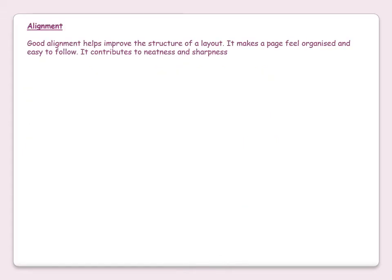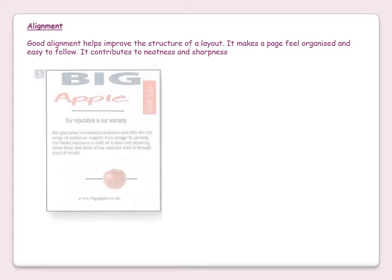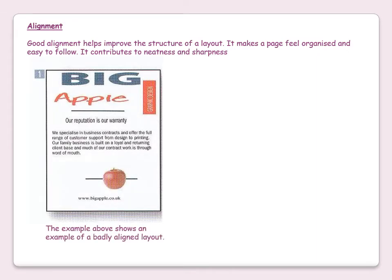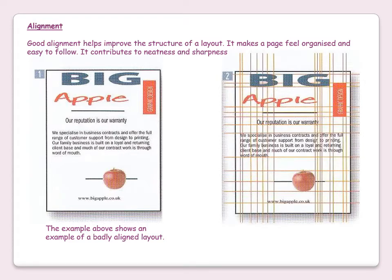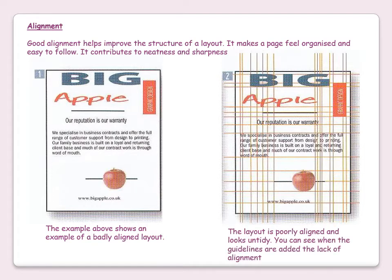Alignment. Good alignment helps improve the structure of a layout. It makes a page feel organized and easy to follow, and it contributes to neatness and sharpness. The example above shows a badly aligned layout. At first you might think it's not too bad, but when you add grid lines or guidelines showing where all the edges of the different parts are, you can see the layout is poorly aligned and looks untidy.